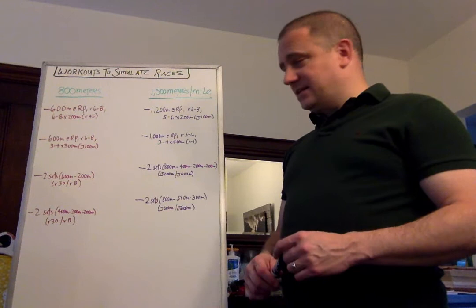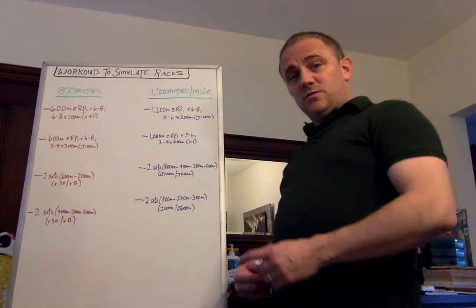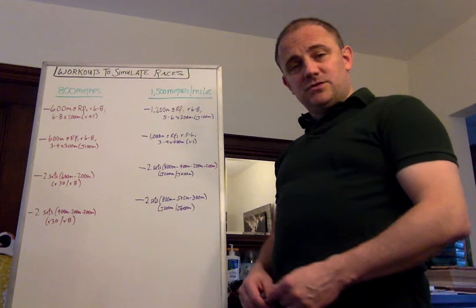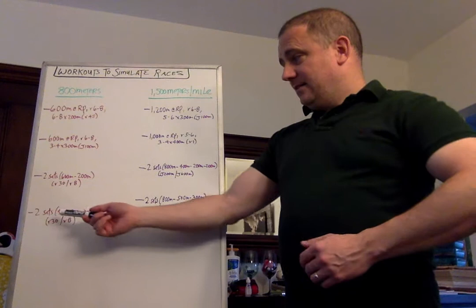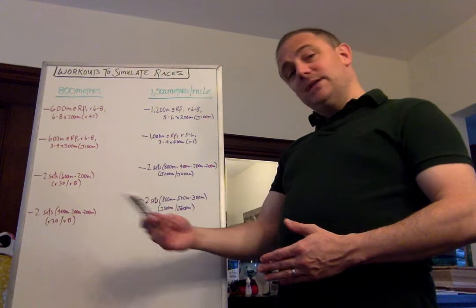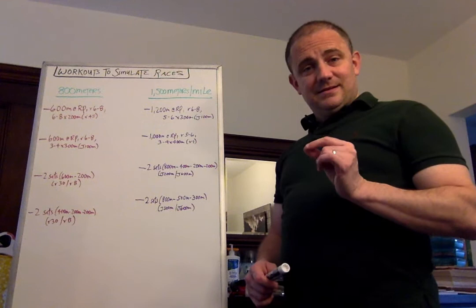And last but not least, a different broken 800, two sets of 400, 200, 200. 400 meter effort at your goal 800 meter pace. Your first 200 at goal 800 meter pace, maybe your second 800, your second 200 at slightly faster. So again, let's say if it's two minutes, you run 60 for the 400, and then 30 and 30, or 29 and 29, or 30 and 29. Remember, there's only going to be 30 seconds after the 400 and then after the 200. And then after the last 200, you take eight minutes active recovery, repeat.